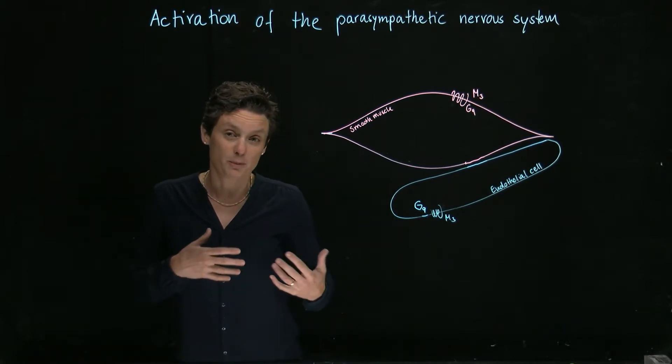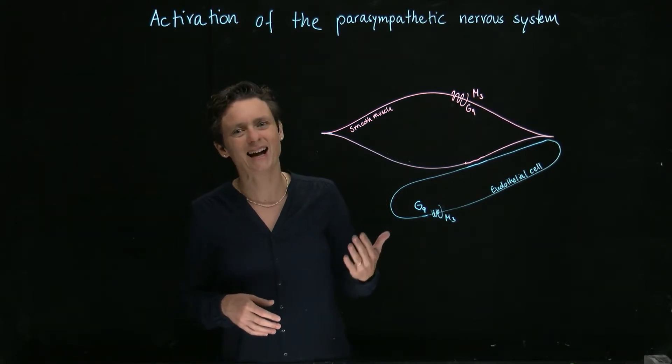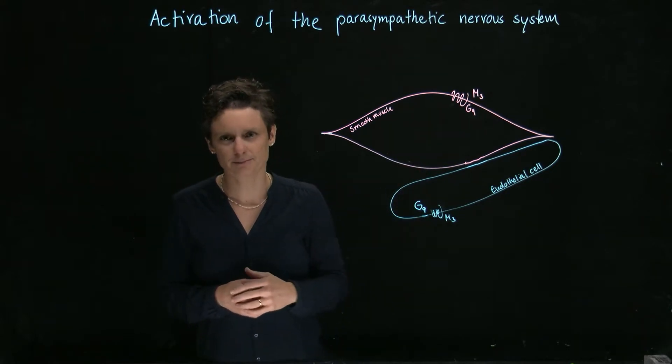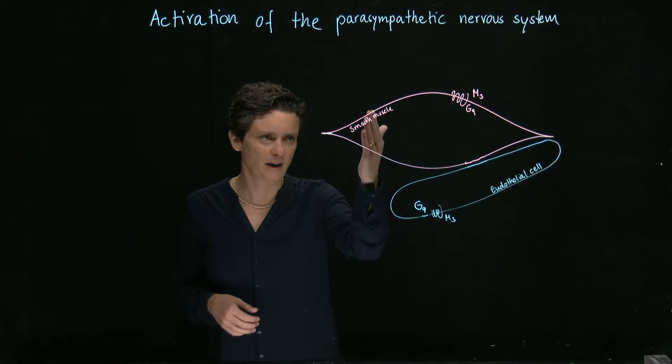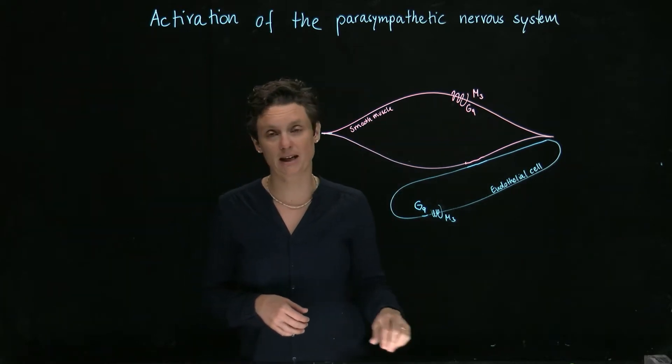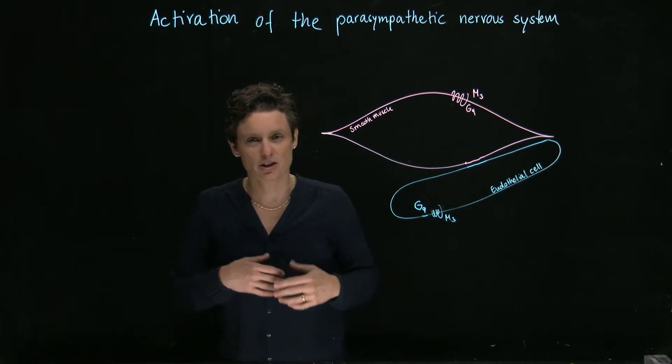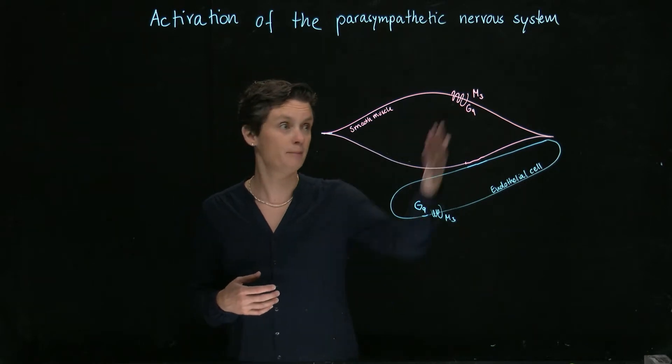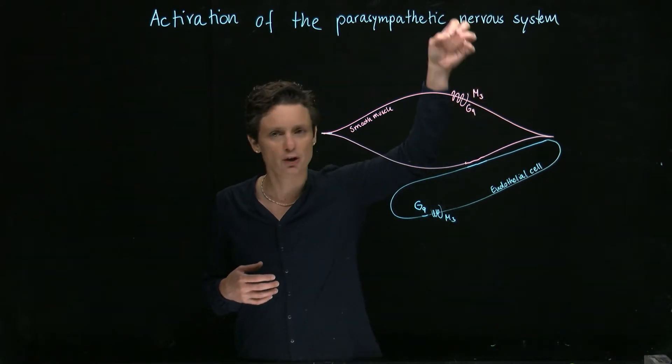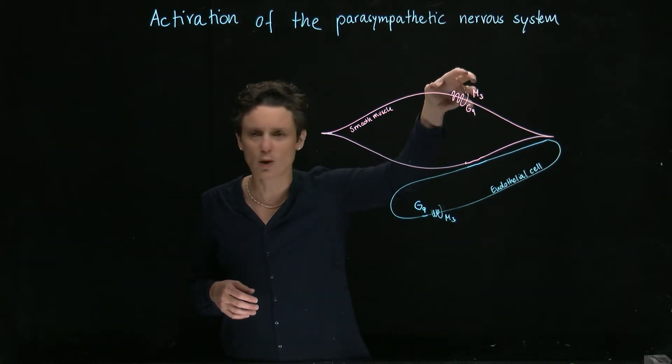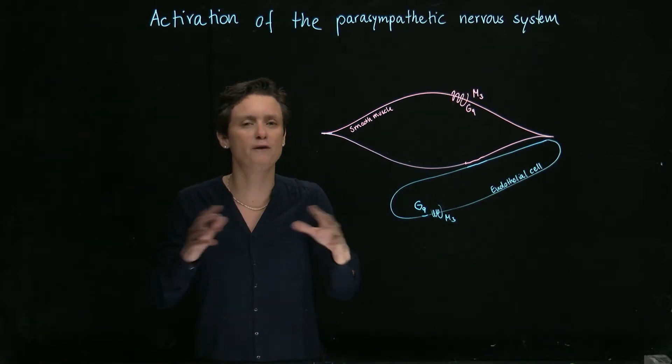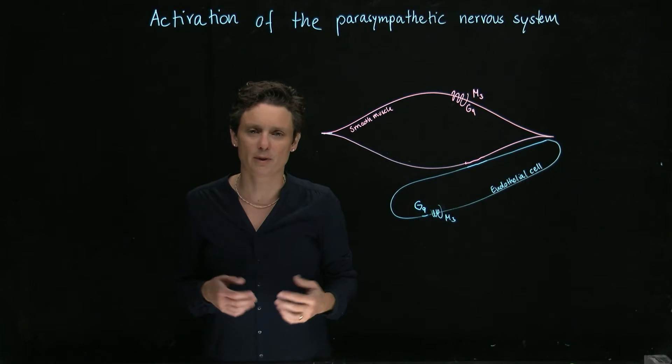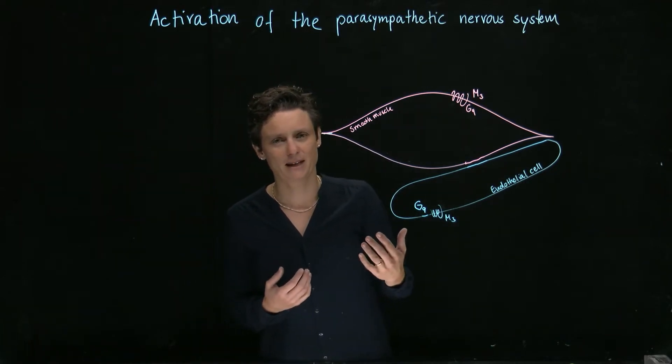However, you probably also know that there are M3 receptors found on the blood vessels. These M3 receptors are found on the smooth muscle and on the endothelial cells. It's not really clear why they are here because there's no innervation, no nerves coming down, no acetylcholine released onto those. So it has no physiological consequences or physiological effects.